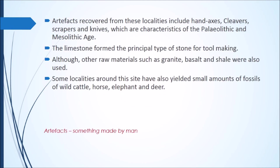Artifacts — something made by humans — recovered from the Deccan Plateau include hand axes, cleavers, scrapers, and knives. These artifacts have the characteristics of the Paleolithic and Mesolithic age. Limestone is considered an important stone for making tools. Other raw materials include granite, basalt, and shale. Small amounts of fossils of wild cattle, horse, elephant, and deer are found in some localities around the Deccan region.